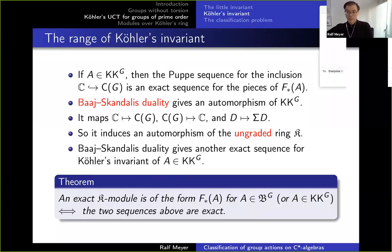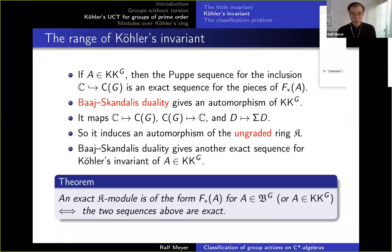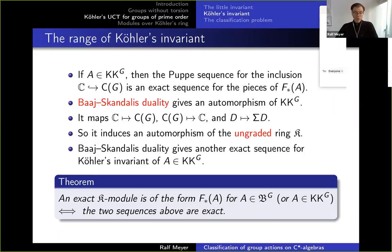This duality is just taking a crossed product by G and giving it the dual action. So the complex numbers with trivial action becomes C(G), and C(G) taking a crossed product gives the compact operators with inner action — hence KKG-equivalent to ℂ. A somewhat deeper result says that D, the third generator (the mapping cone), goes to the suspension of D. So Baaj-Skandalis duality gives an automorphism of the ring K, and the Puppe sequence for the inclusion ℂ into C(G) gives a dual Puppe sequence for a map from C(G) to ℂ.